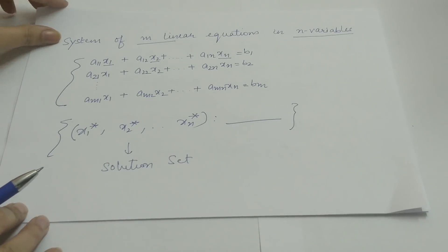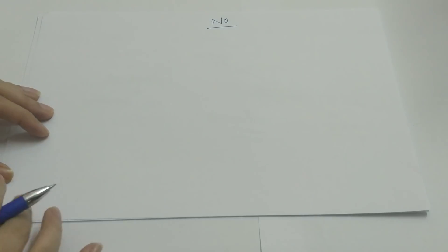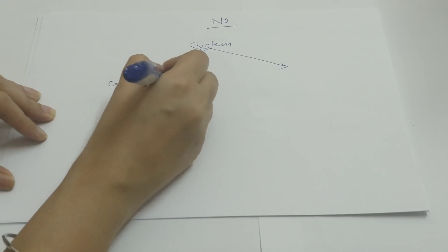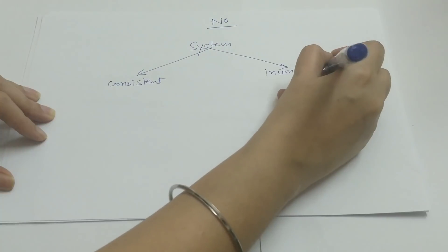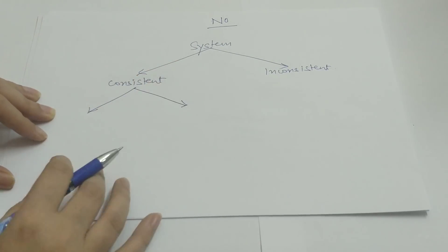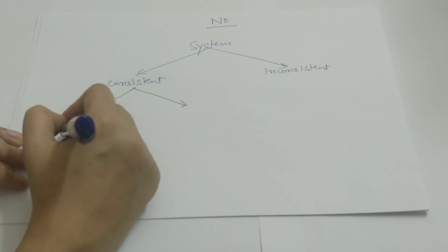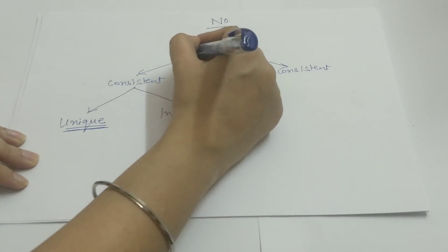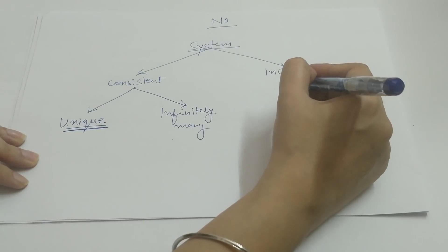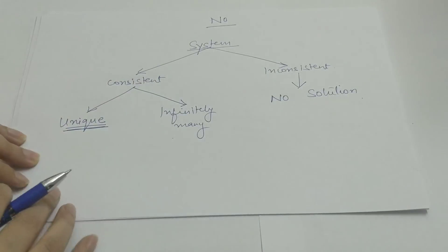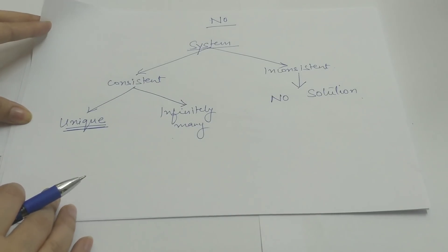The question that arises now is whether a solution always exists. The answer is no — a solution may or may not exist. Accordingly, a system is categorized as a consistent system or an inconsistent system. A consistent system definitely has at least one solution. Depending upon the number of solutions, it is further categorized into two categories: unique solution, when the system has only one solution, and infinitely many solutions, when the system has infinitely many solutions. A system is said to be inconsistent if there does not exist any solution at all — this is the case of no solution.